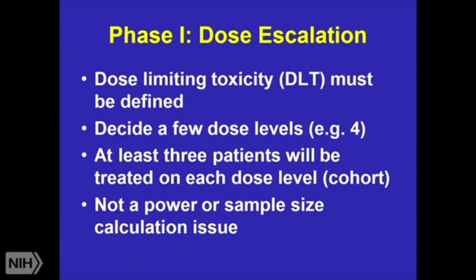One of the simple phase one study types we do are called dose escalation studies. We're looking, many times in these first-in-human studies with a new compound, for something called a dose limiting toxicity, or DLT. It might be that this drug has been used in humans before but now I'm trying it in a different patient group. A lot of these study designs came out of oncology — the cancer world. We've been modifying them over the years for less severe illnesses, and there are a lot of different ways to do phase one and phase two studies.